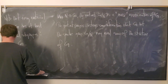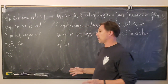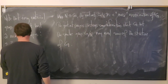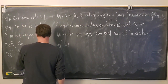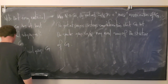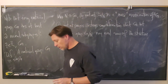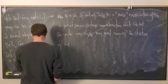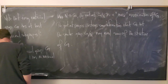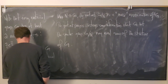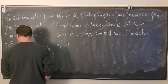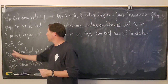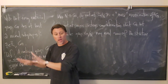That leads us to a definition. A non-trivial group G is called simple if it has no non-trivial proper normal subgroups. So simple groups are those that are non-trivial themselves and whose only normal subgroups are the trivial subgroup and the whole group.